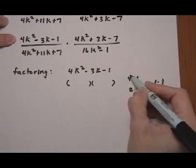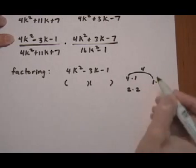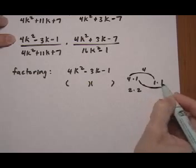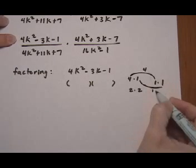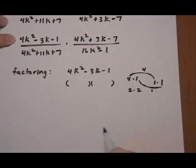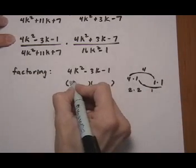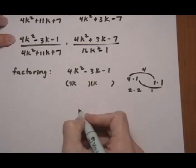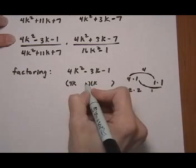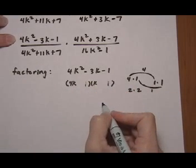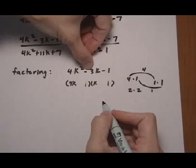So what we want to look at then is a 4 hitting a 1 and a 1 hitting a 1. That would give us a difference of 3. So that's the factoring we want to use. 4k and k, and then 1 and 1. Opposite signs, making sure that the bigger one is going to get the negative.